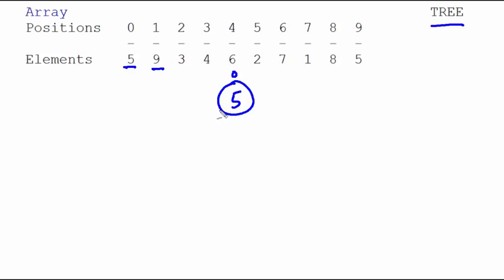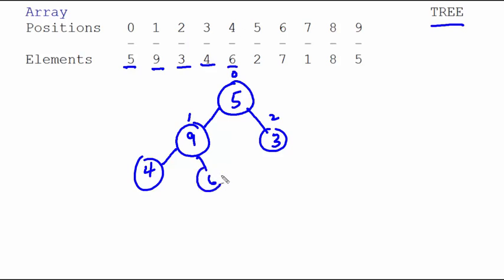Now the nine, it goes to the left, and that's position one of the tree. The three goes to the right, which is position two. And then the four goes here, the six here, the two here.